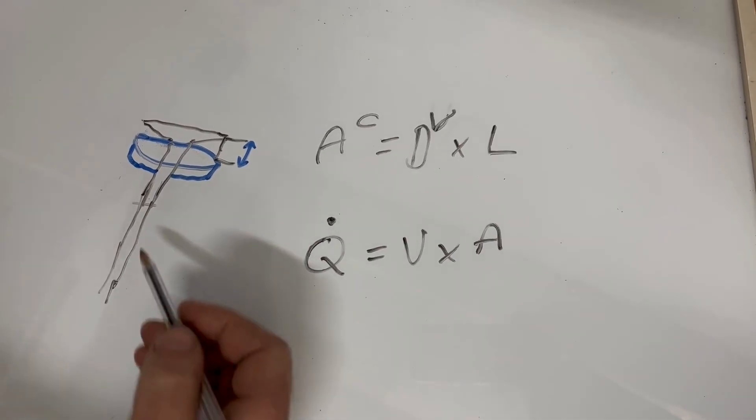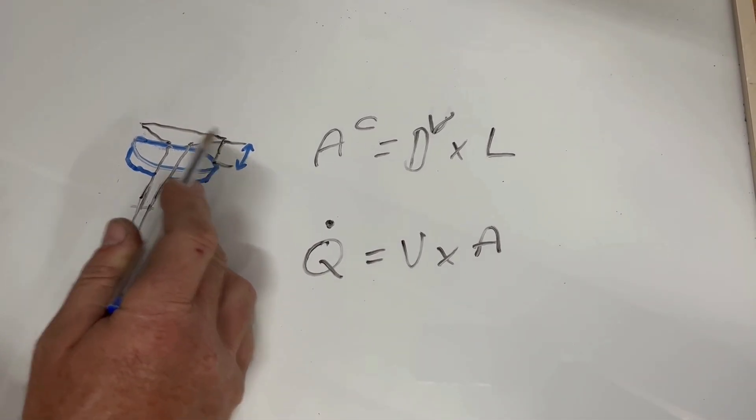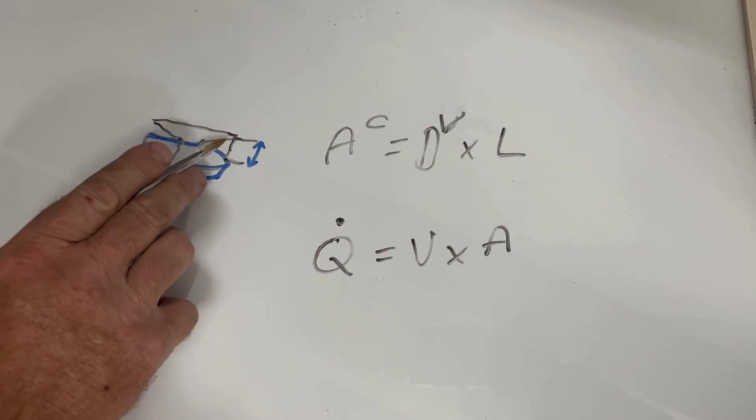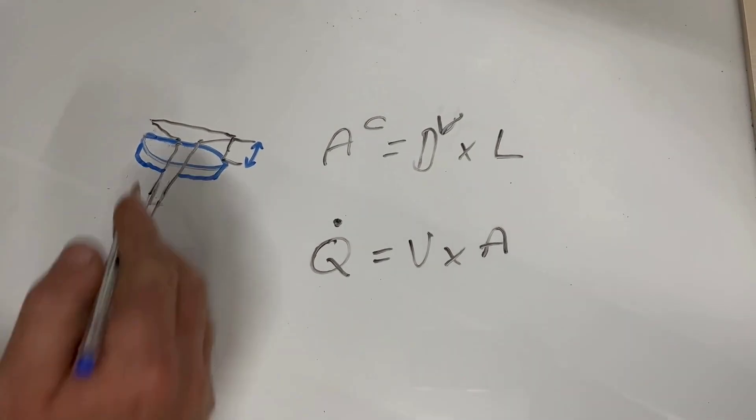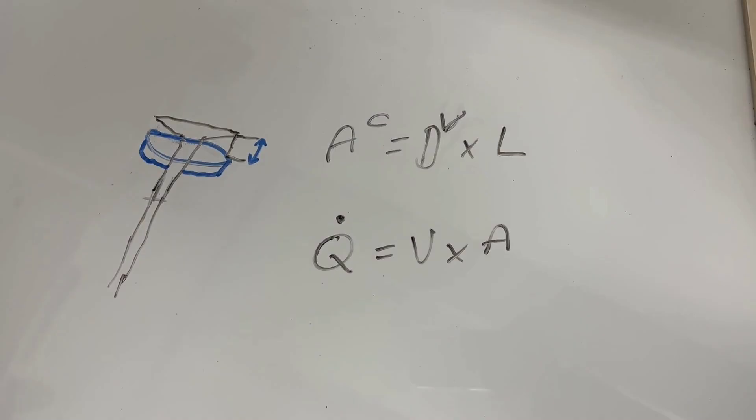So curtain area being the diameter of your valve multiplied by the valve lift. This creates an area, if you like, such as a curtain.